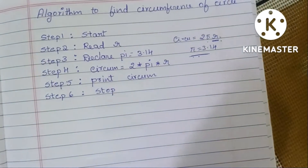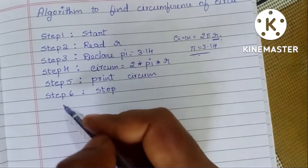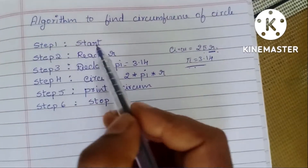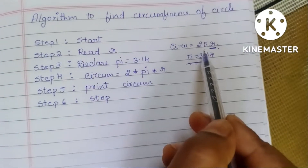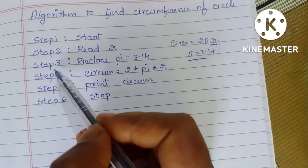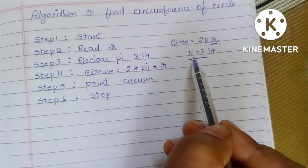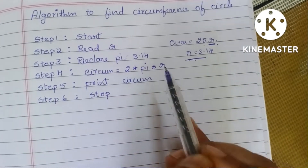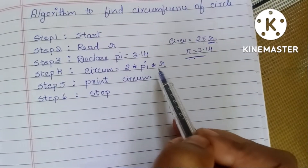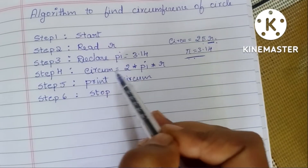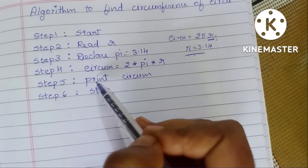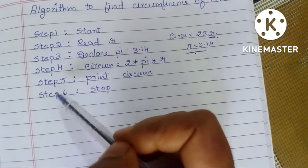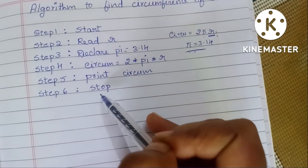To recap: an algorithm always starts with a start statement and ends with a stop statement. Step 1: Start. Step 2: Read radius r. Step 3: Declare pi = 3.14. Step 4: circum = 2 × pi × r. Step 5: Print circum — that is our output. Step 6: Stop.